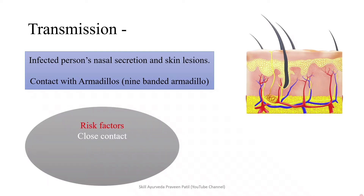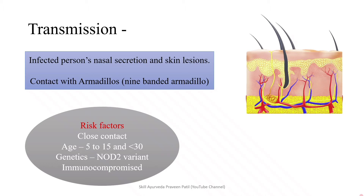The risk factors are close contact with the infected person, and age between 5 to 15 and above 30 — this is the age group where people commonly get affected with leprosy. Genetics, specifically the NOD2 variant, is also a risk factor. Additionally, immunocompromised individuals, including those suffering from long-term diabetes and HIV infections, come under the risk factors.